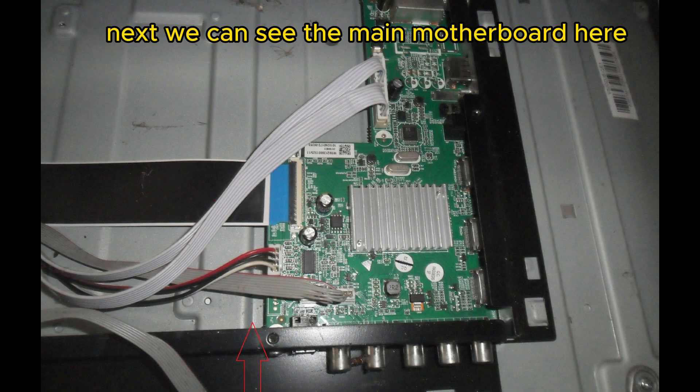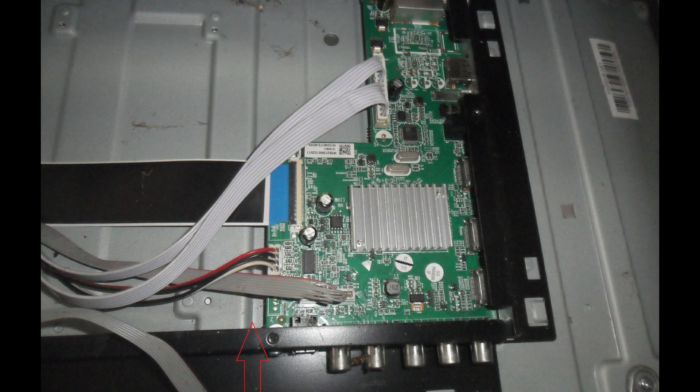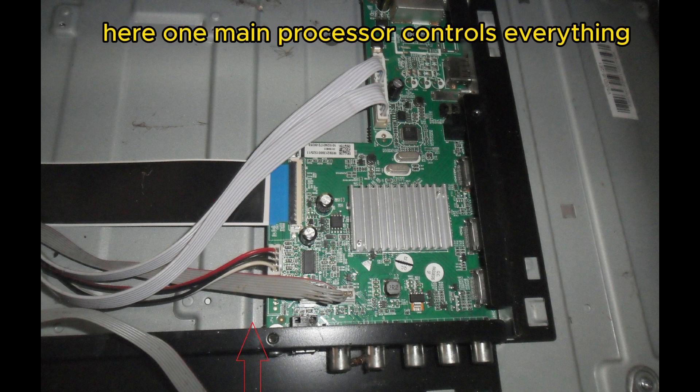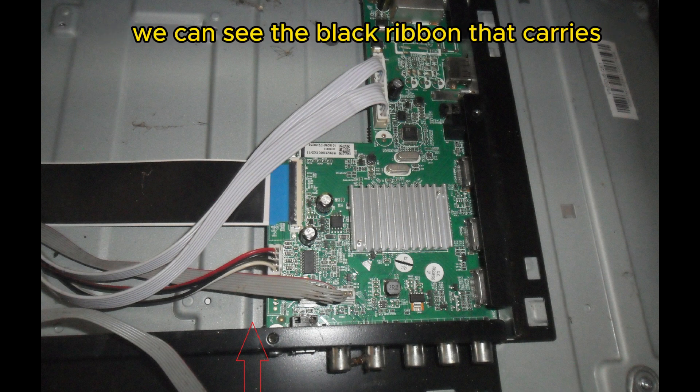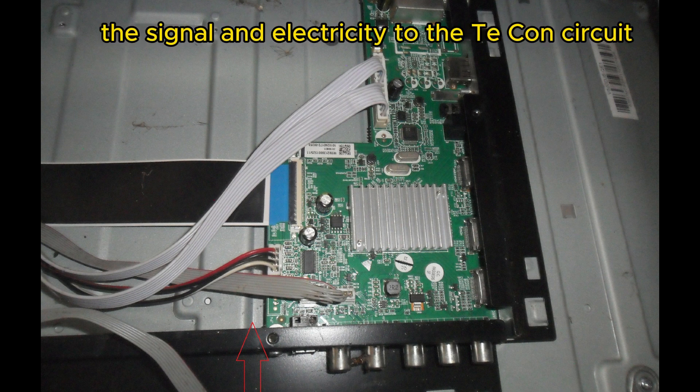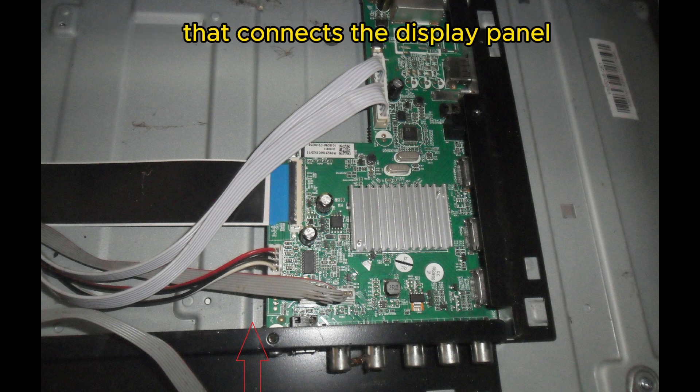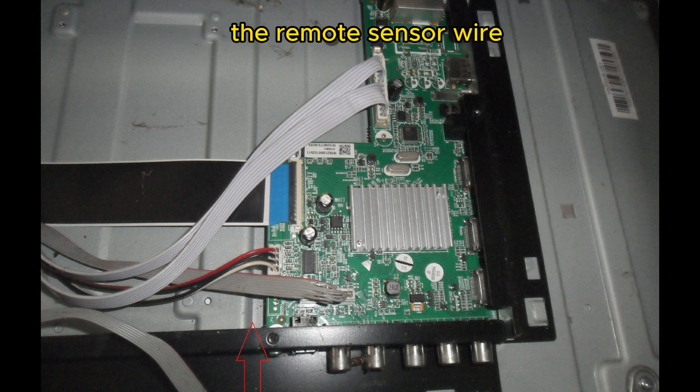Next we can see the main motherboard here. It is quite a small circuit, here one main processor controls everything. We can see the black ribbon that carries the signal and electricity to the T-CON circuit that connects the display panel, as well as the power supply wire, the remote sensor wire, and the speaker wire.